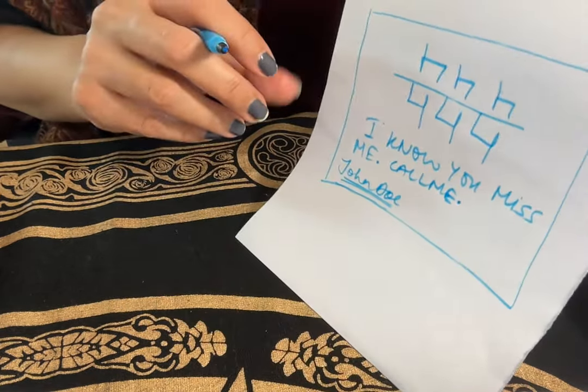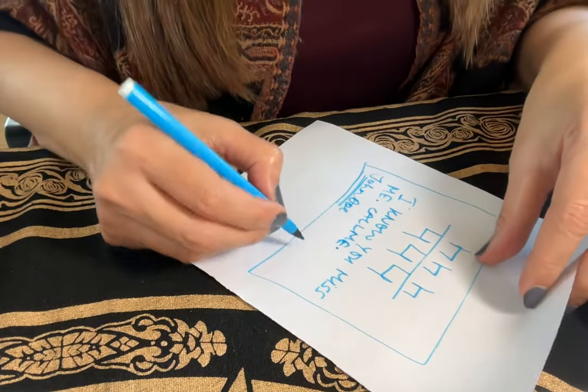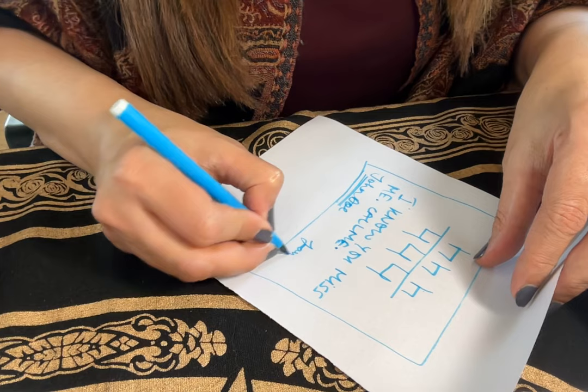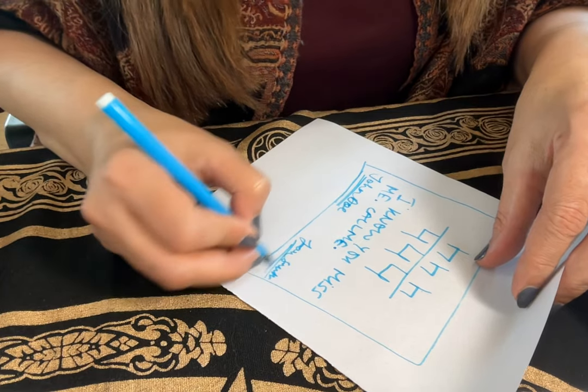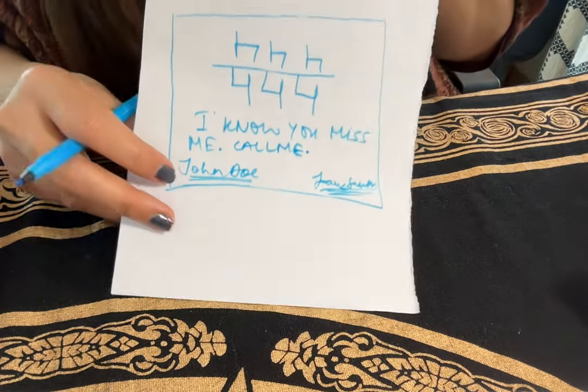And this side is your name. We use Joanne Smith. Underline it three times.